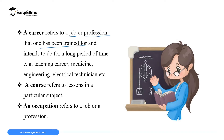A career refers to a job or a profession that one has been trained for and intends to do for a very long period of time. For you to say that you are doing a career in a certain area, you must train for that career and have the intention of doing that job or being in that profession for a very long time. A good example is your physics teacher, Mr. Albert, who is in a teaching career. Other careers include medicine and engineering or even electrical technician.